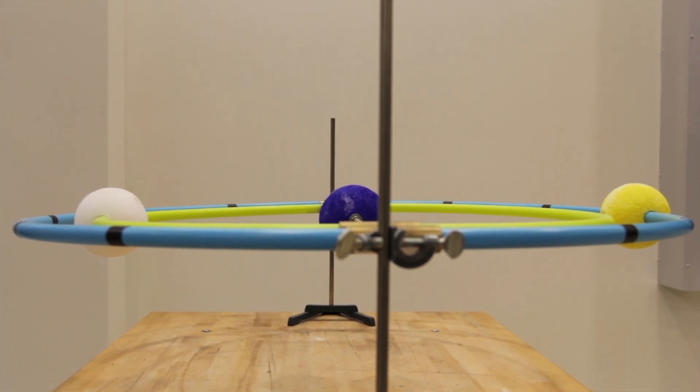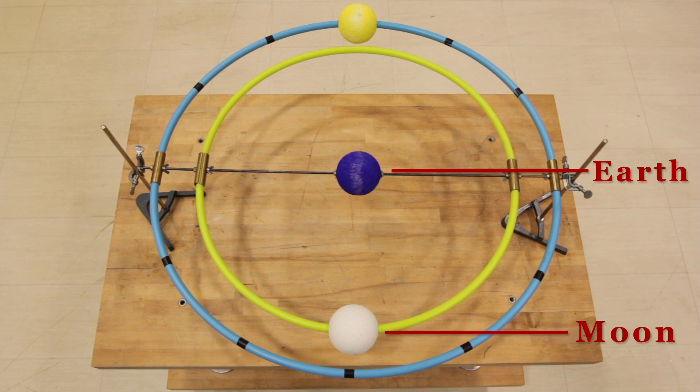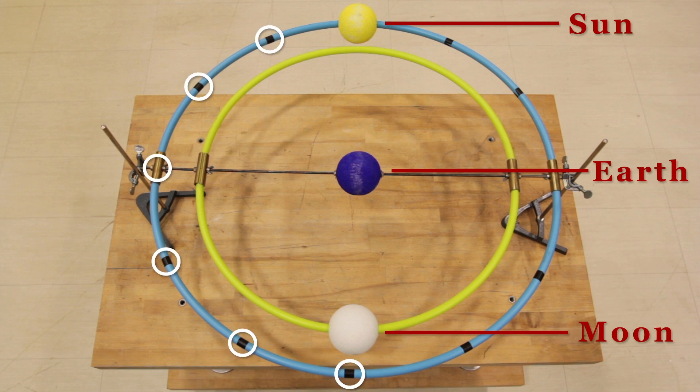It consists of two hula hoops connected by a threaded rod. Earth is at the center, the Moon is the white styrofoam ball on the inner circle, and the Sun is the yellow ball on the outer circle. Twelve pieces of black tape mark the Sun's monthly apparent motion. Both the Sun and Moon can be moved on their orbits.